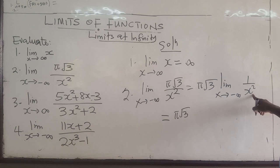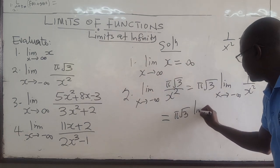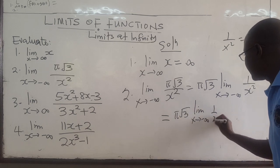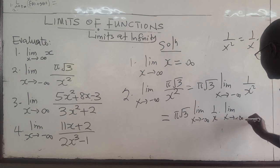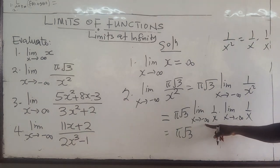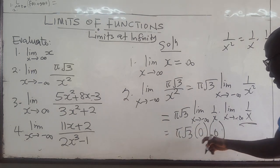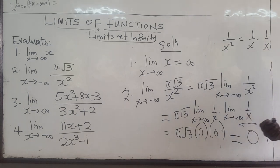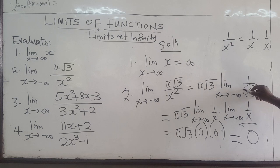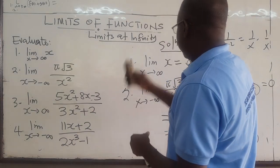So we have π√3 times the limit as x approaches negative infinity of 1 over x squared. Note that 1 over x² is the same as (1/x) times (1/x). Using the product rule, this becomes the limit as x→-∞ of 1/x times the limit as x→-∞ of 1/x. We already know that limit is 0, so we have 0 times 0, which equals 0. As x gets larger, 1 over something very large goes to 0.